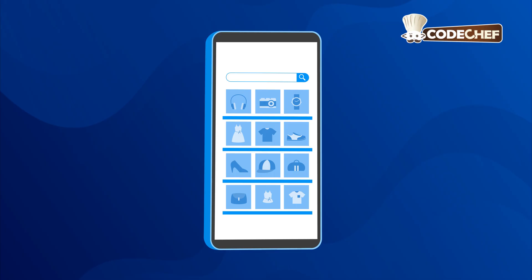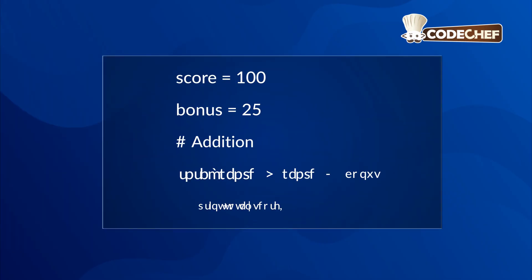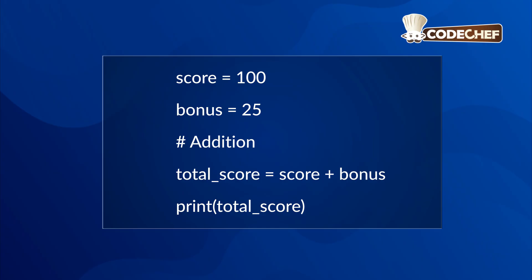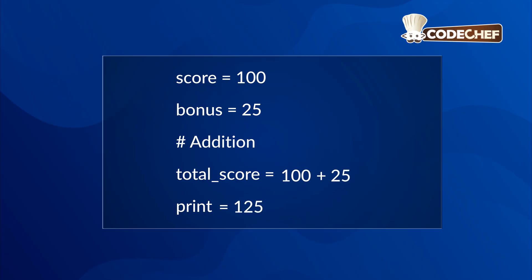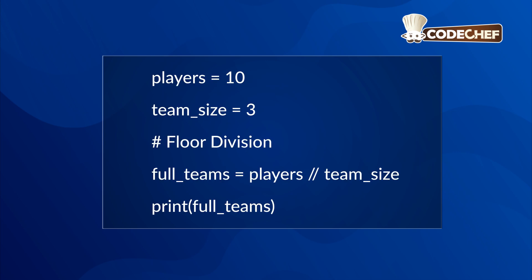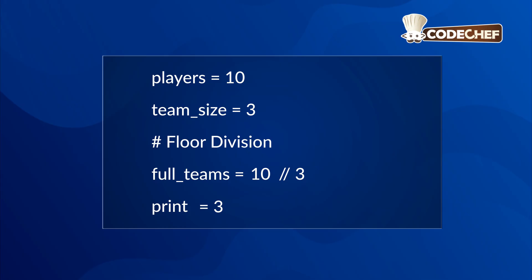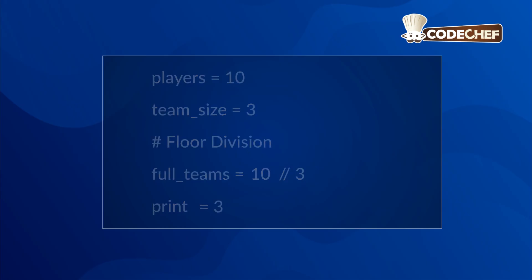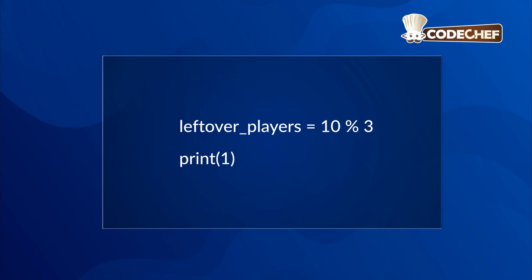Let's see it in action. Imagine we're tracking points in a game — we add the score and bonus to get our total score, and the output is 125. If we have ten players and teams of three, floor division tells us we can make three full teams, and modulo tells us there will be one player left over.